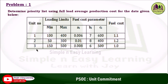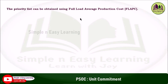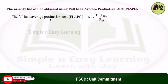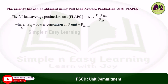In this table, units 1, 2, and 3 are given with their loading limits — minimum and maximum — along with fuel cost parameters AI, BI, and CI. The fuel costs are given as 1.1, 1.2, and 1. The priority list can be obtained using full load average production cost. The FLAPC formula is: FLAPC_i = K_i × F_i(PG_i) / PG_i, where PG_i is the power generation of the ith unit equal to PG_i max.